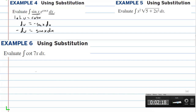Now we have sine of x dx, and we're going to turn that into negative du. The sine of x dx becomes negative du, so we have negative integral of e to the u du. The integral of e to the u is e to the u, so we have negative e to the u plus c, and then we replace u back with cosine of x, giving negative e to the cosine of x plus c. The derivative of this would be e to the cosine of x times negative sine of x, and the two negatives become a positive.